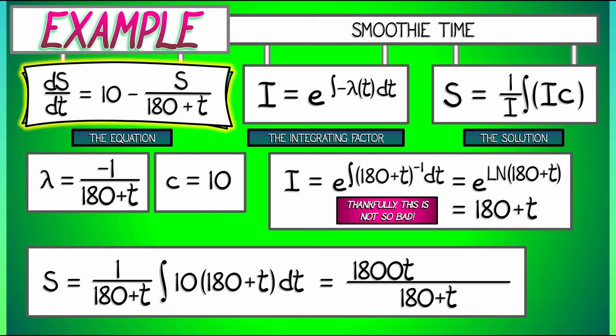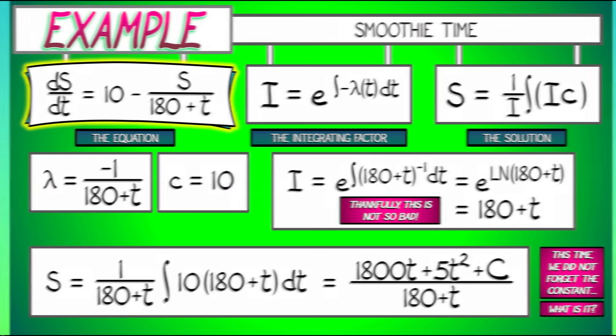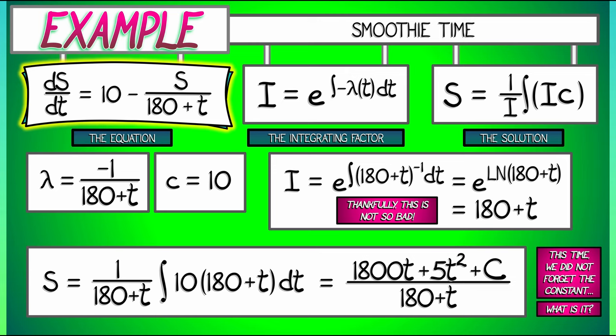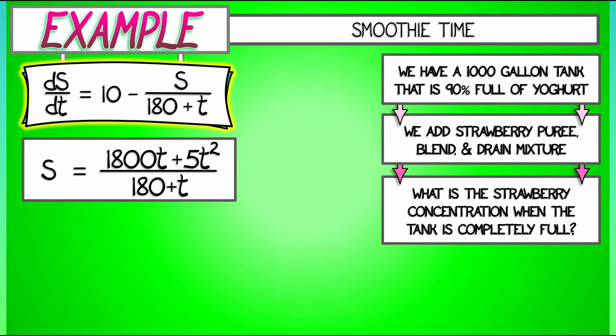This time we did not forget the constant, but what is it? We have to go back to the particulars of this problem. We start off with no strawberry stuff in the tank, that means at t equals 0, S is equal to 0. That means this constant capital C vanishes.